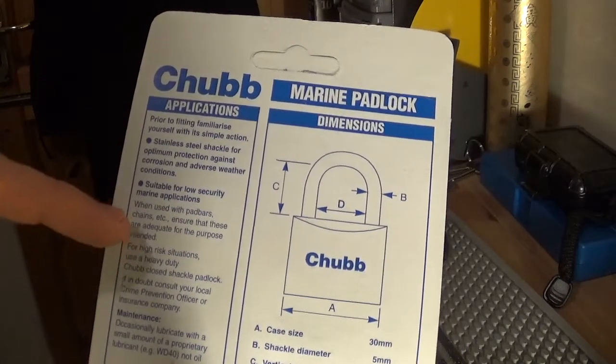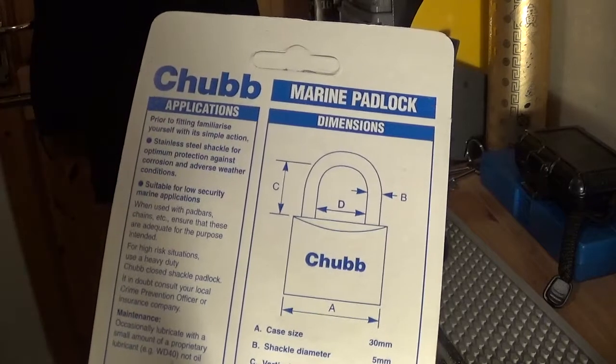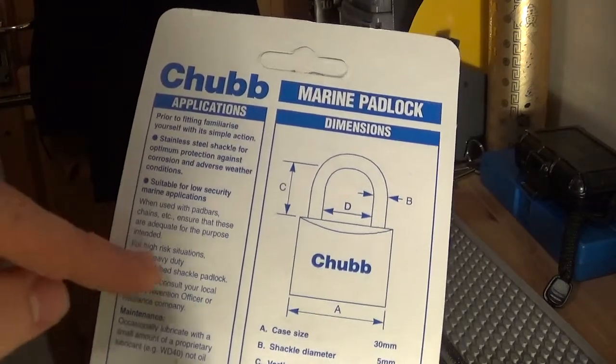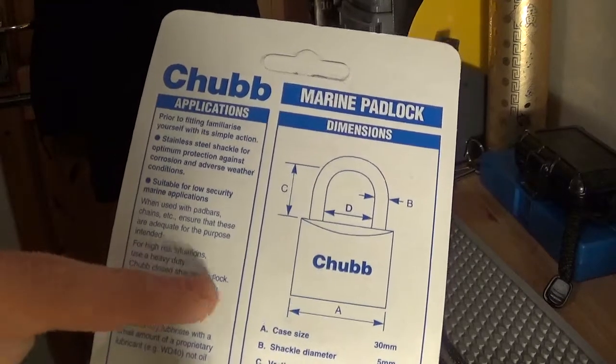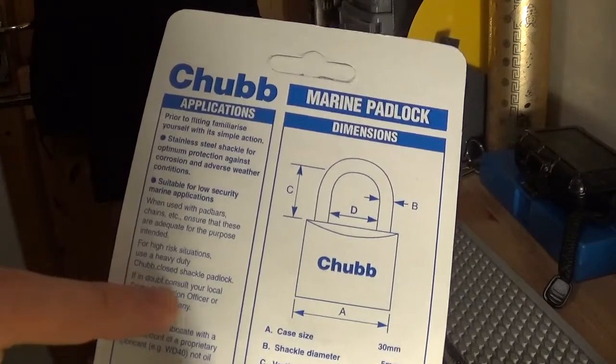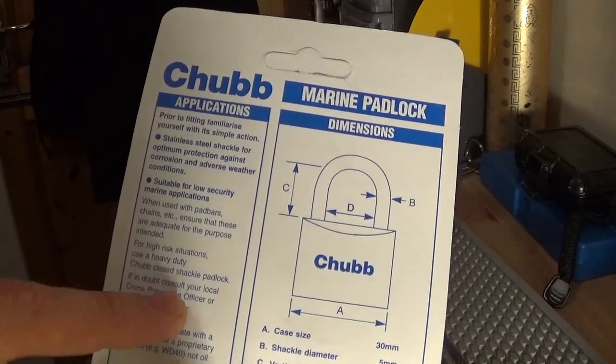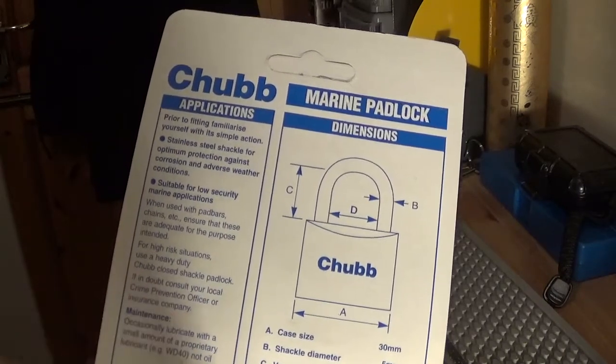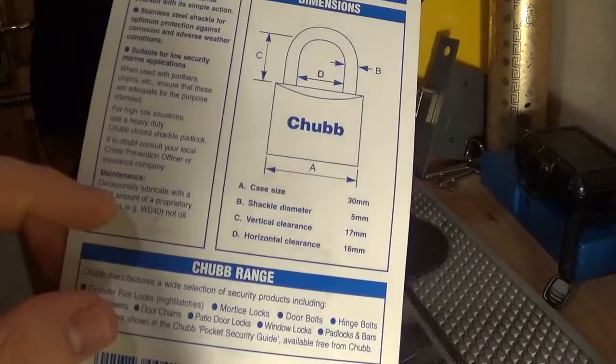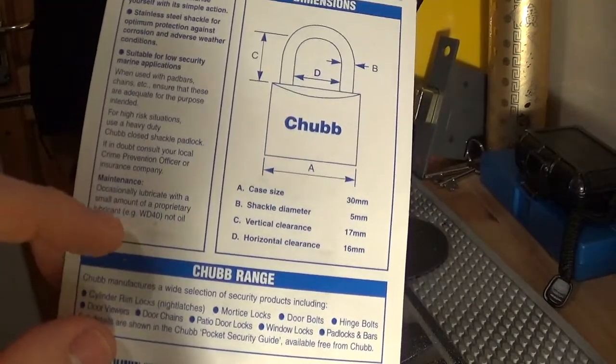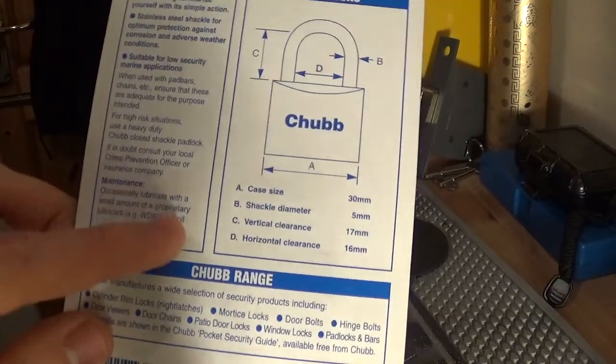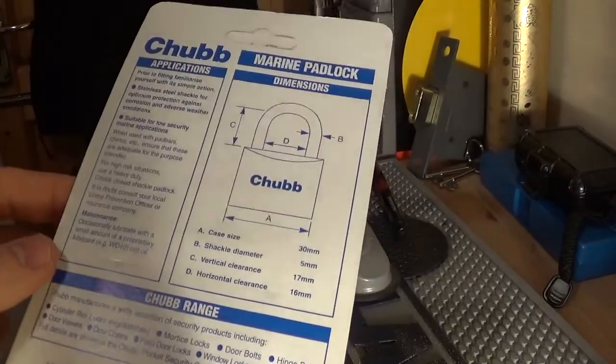For high-risk situations, use a heavy-duty Chubb closed shackle padlock. If in doubt, consult your local crime prevention officer or insurance company. Maintenance: occasionally lubricate with a small amount of proprietary lubricant, for example WD-40, not oil.